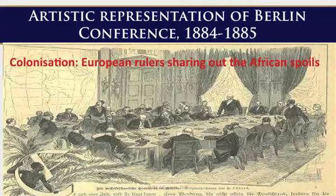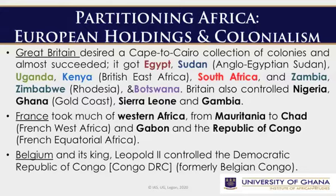At the Berlin Conference, some European countries — including England, France, Belgium, Spain, and Portugal — met to decide the future of Africa and how to share the lands of Africa amongst themselves. The result was that Africa was partitioned and Europeans took hold of certain parts of African land.